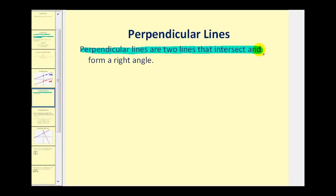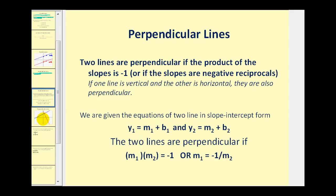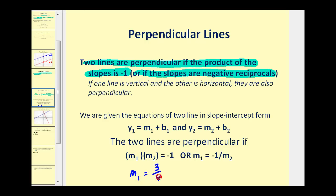Perpendicular lines are two lines that intersect and form a right angle. In order for two lines to be perpendicular, the product of the slopes must equal negative one, or we can also say that the slopes are negative reciprocals. For example, if the slope of line one is equal to three-fourths, then the slope of the second line that would be perpendicular to this line would be negative four-thirds — we flip it over and change the sign.